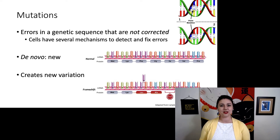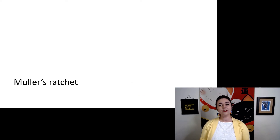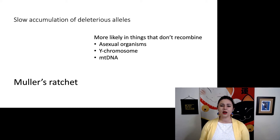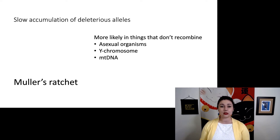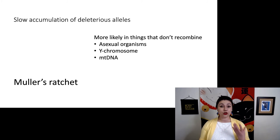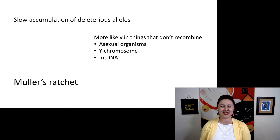Let's talk about some specific examples of mutation. One phenomenon is called Mueller's ratchet — the idea that there is a slow accumulation of deleterious alleles because of the constant flow of mutation. This really happens mostly in things that don't recombine: asexual organisms, primarily single-celled ones, but also the Y chromosome and mitochondrial DNA, since these do not recombine.